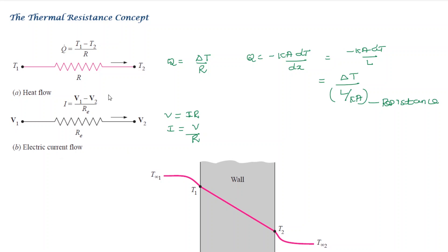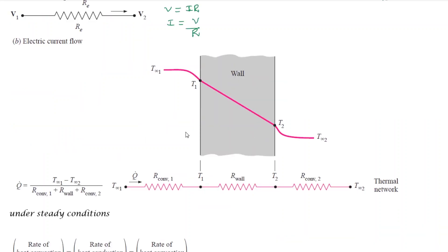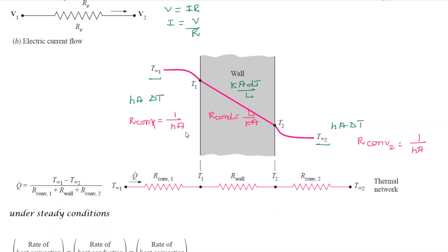For a wall with convection on both sides, the convection resistance is 1/(h·A). The total resistance in series is: R_total equals R_convection1 plus R_conduction plus R_convection2, which equals 1/(h1·A) plus L/(k·A) plus 1/(h2·A). The overall heat transfer is Q equals (T_infinity_inside minus T_infinity_outside) divided by R_total. This is the thermal resistance network.